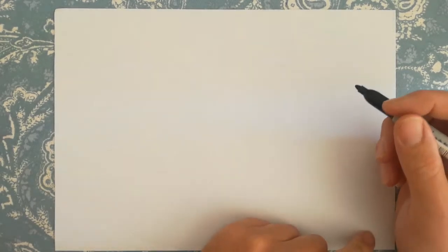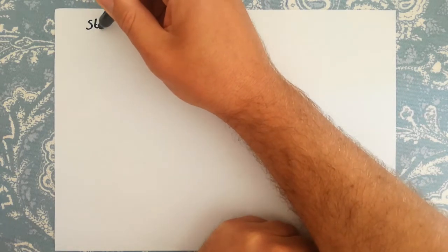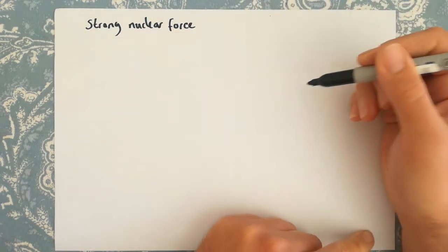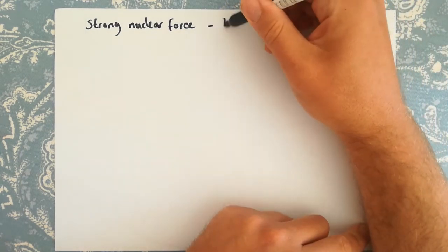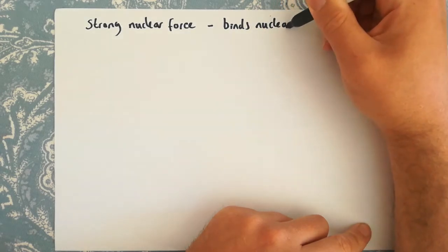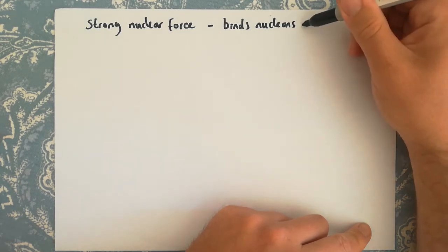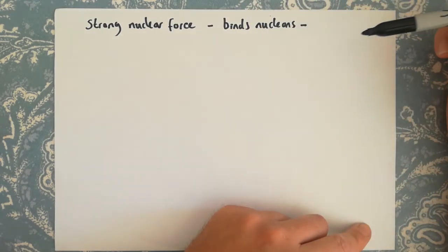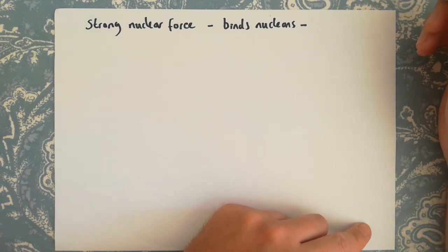Hi Year 12. In this video we are going to look at the final of the three forces involved in the standard model of particle physics and some of the Feynman diagrams involved. We're looking at what's known as the strong nuclear force or strong nuclear interaction — this is the force that binds nucleons together inside the nucleus. The exchange particle involved here is something called the gluon.